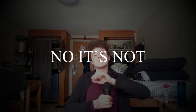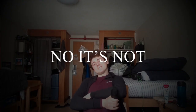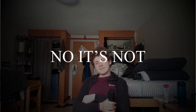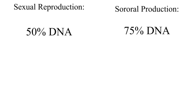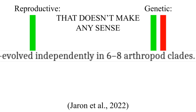And that's why it's called the birds and the bees. That 75% is very enticing, which is why a lot of insects and insect-adjacent animals are making progress towards evolving it. They're reproductively haploid, but not genetically.